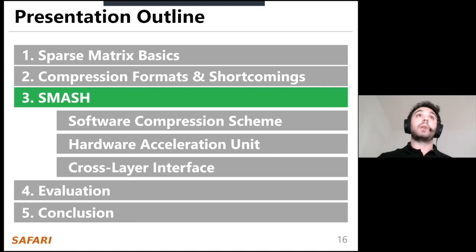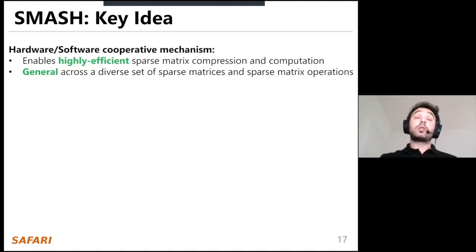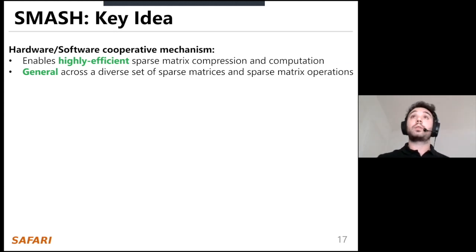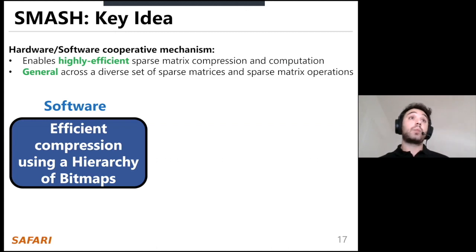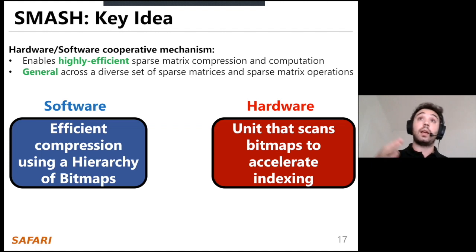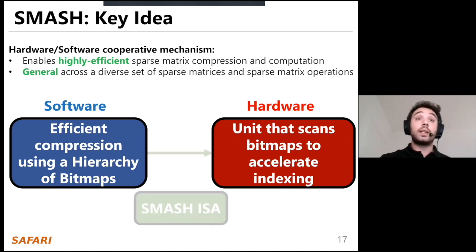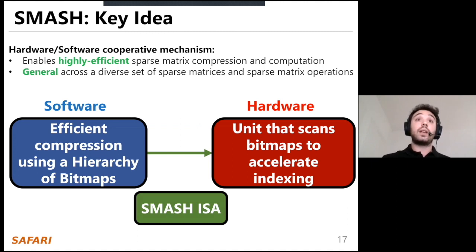To this end, we propose SMASH. The key idea is a hardware-software cooperative mechanism that enables highly efficient sparse matrix compression and computation, general across a diverse set of sparse matrices and operations. On the software side, SMASH employs an efficient compression scheme using a hierarchy of bitmaps. On the hardware side, we employ a bitmap unit that scans the bitmaps to accelerate indexing. Software and hardware communicate using an interface called the SMASH ISA, which is a set of ISA primitives.